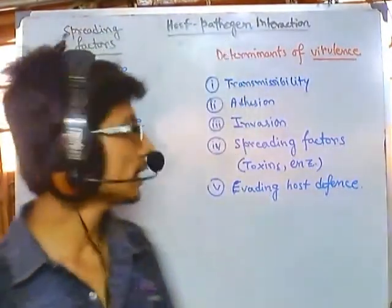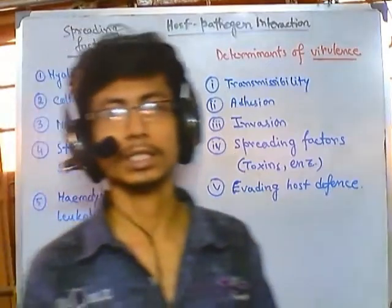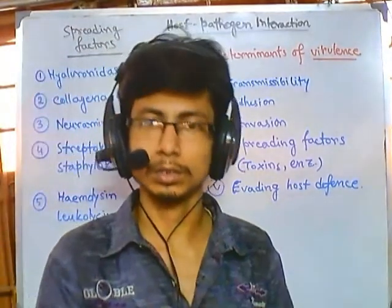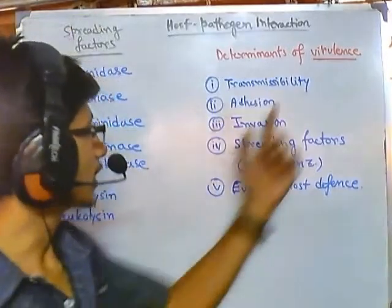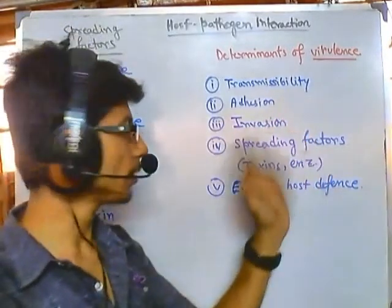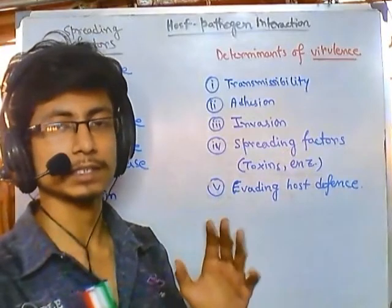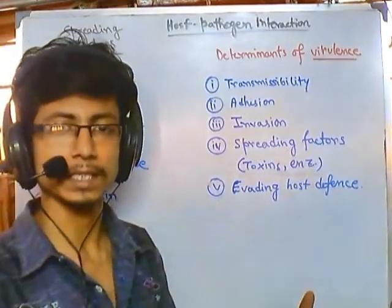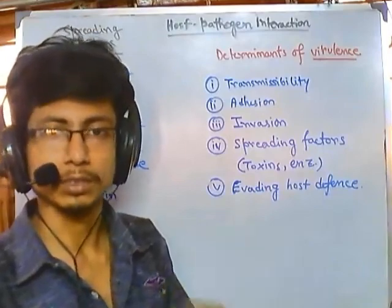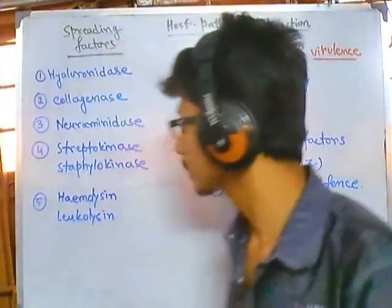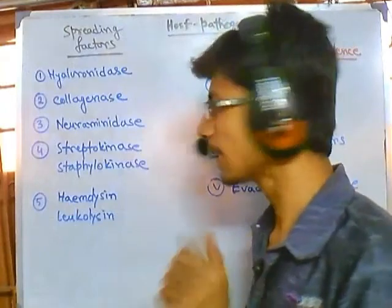Welcome back. We are talking about the host-pathogen interaction and the virulence caused by a pathogen onto the host. We have talked about the different stages - adhesion and invasion - and now we will be talking about the spreading factors, which are the accessory factors secreted by bacteria to damage the host tissue and host cells. I have listed down five different types of factors.